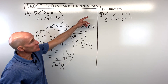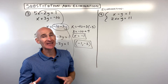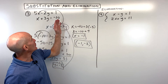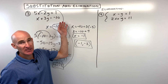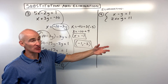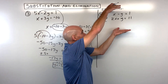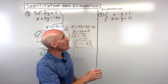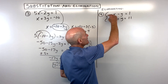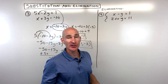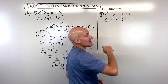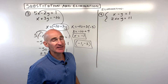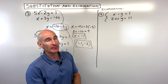Now for number 4, we're switching over to the elimination method. The elimination method is a little different — we don't have to isolate a variable and substitute. Instead, we add or subtract equations together. You can multiply any equation by a constant, as long as you multiply all terms by that same number, and then add the equations together so one variable cancels.